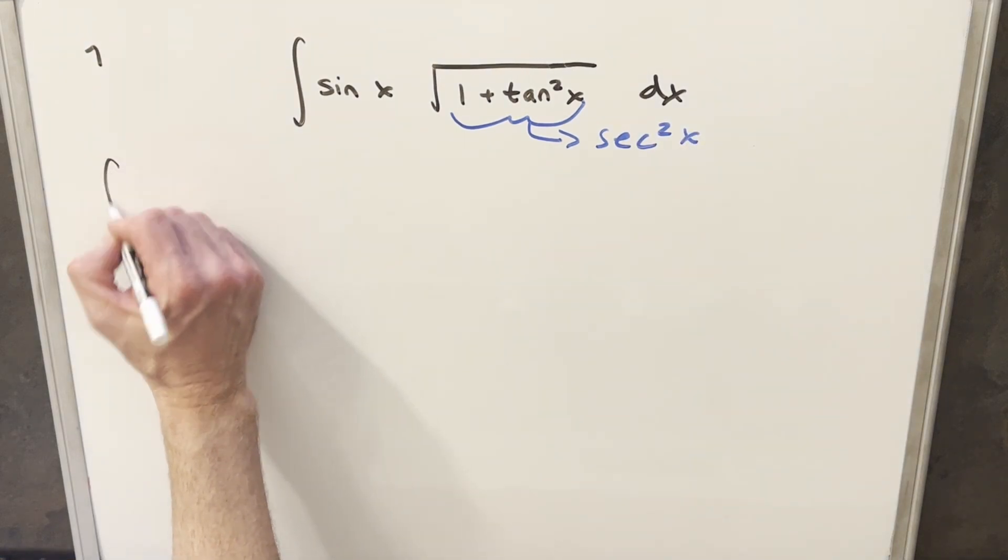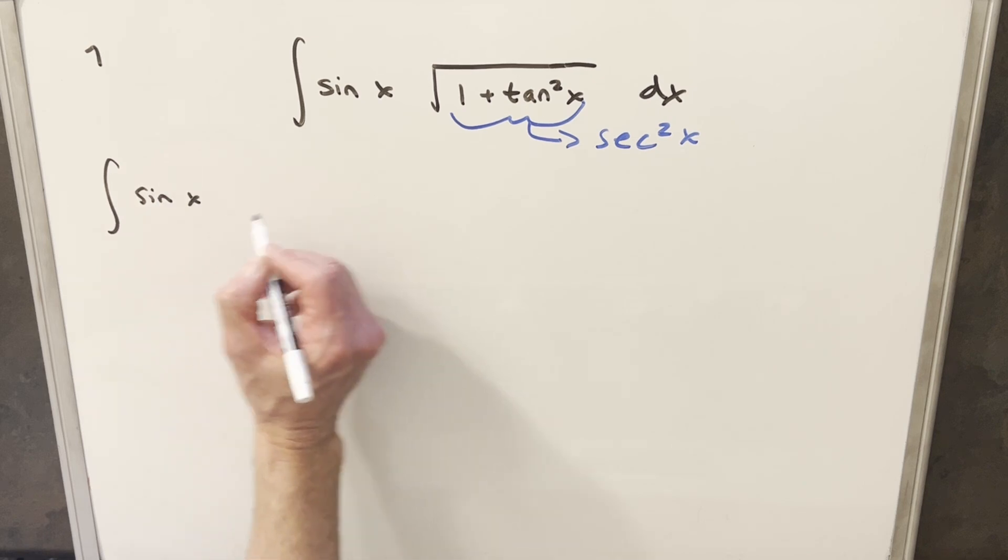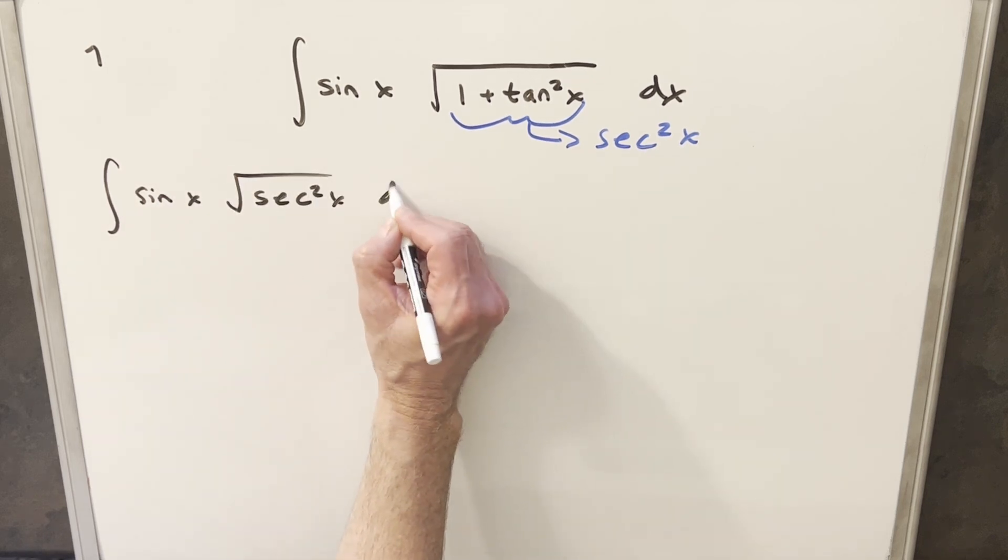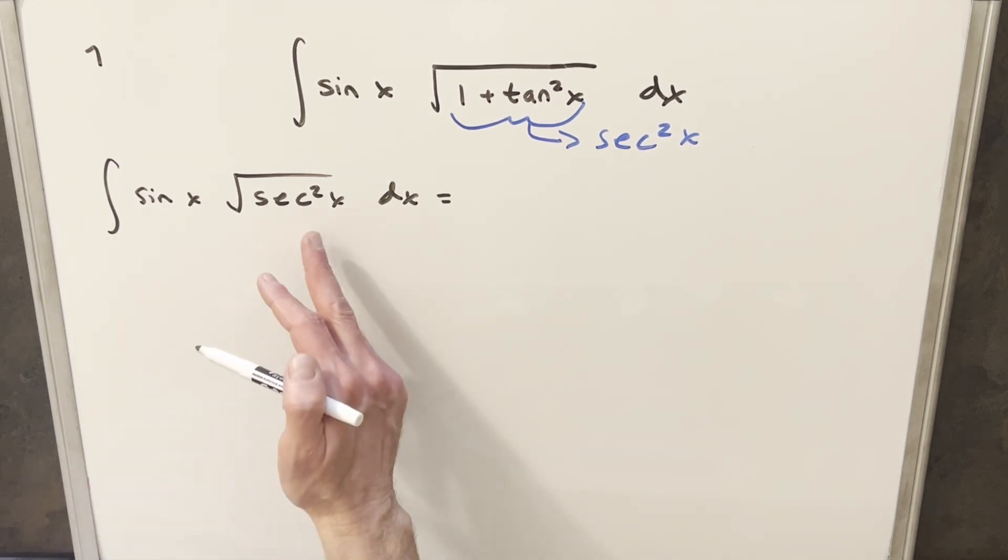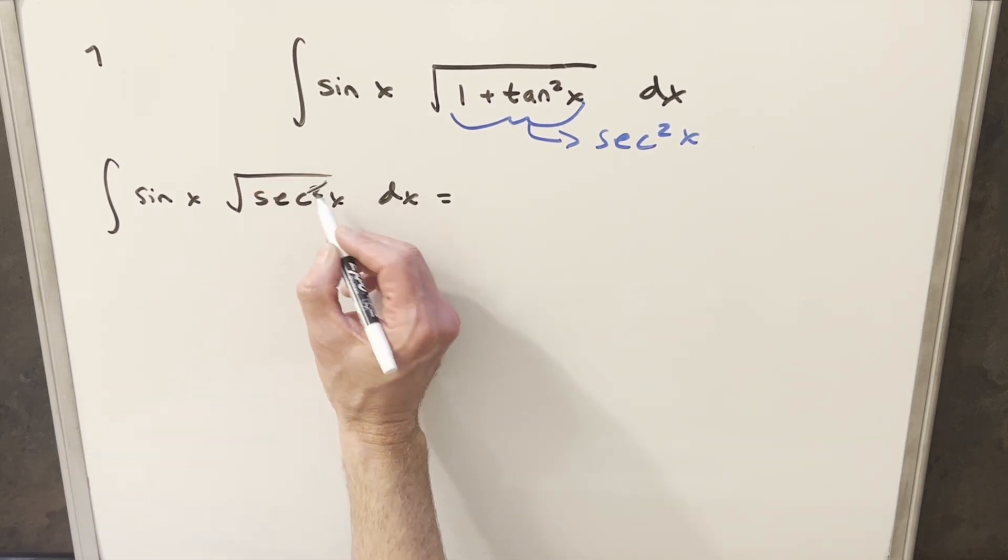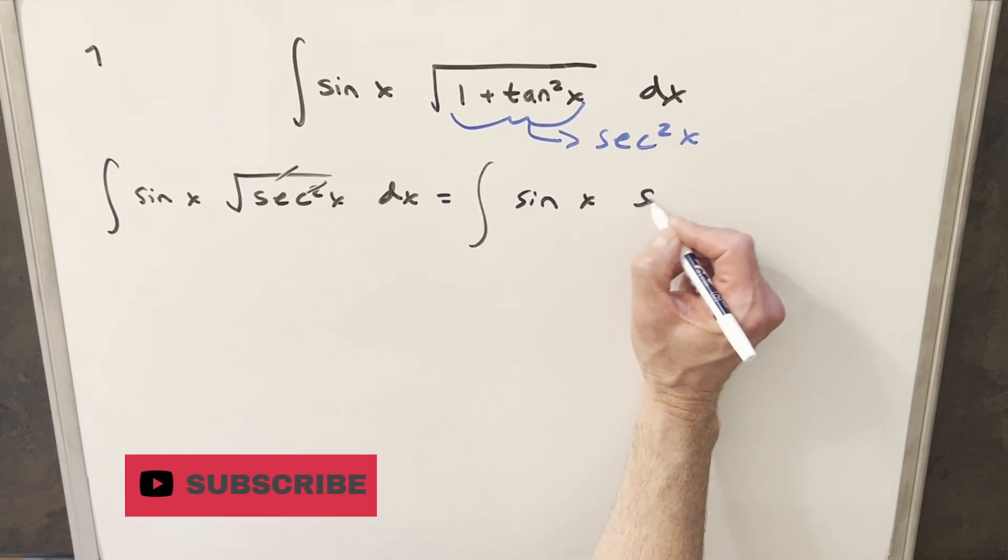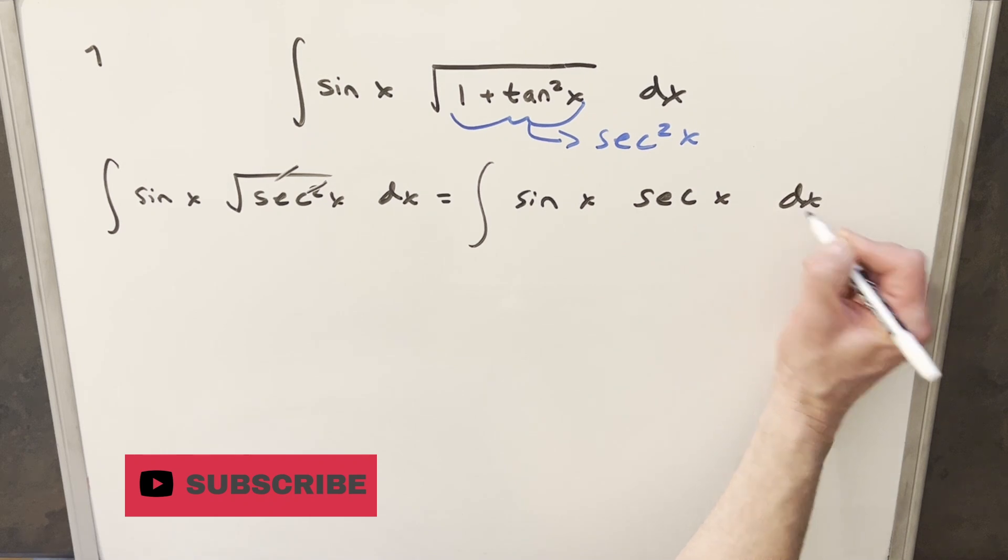Let's come over here and rewrite this. We'll have sine x and rewrite this whole thing as secant squared x dx. But because secant is squared inside the radical, I can essentially cancel these, right? So we can write this as sine x times secant x dx.